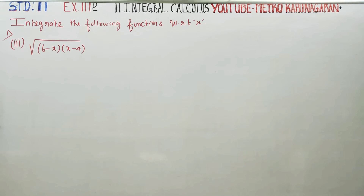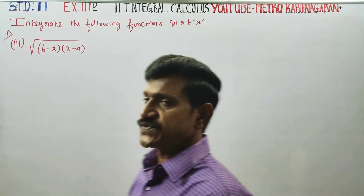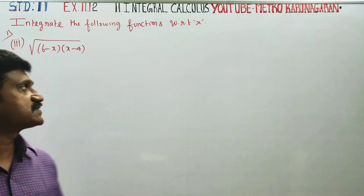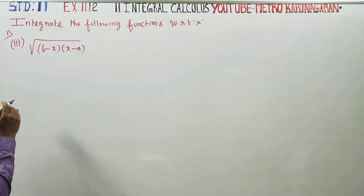Dear 11th standard students, in exercise number 11.12, you have to integrate square root of (6 minus x) divided by square root of (x minus 4).